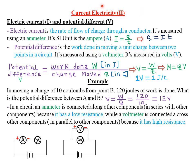Today we are looking at Current Electricity 2, which is just a continuation of cells and simple circuits, which was the last chapter under Form 1 work. So let's start by discussing what we mean by electric current, noted by capital I, and potential difference, noted by capital V.